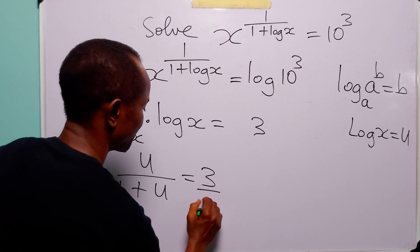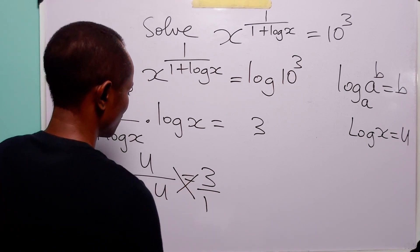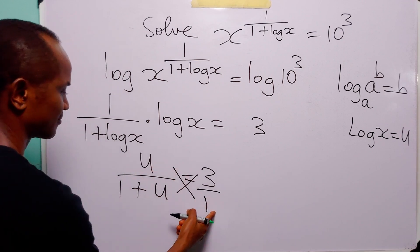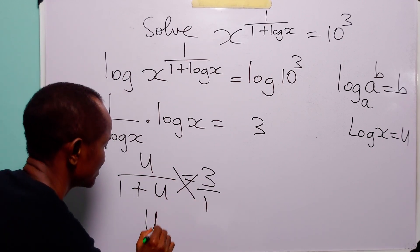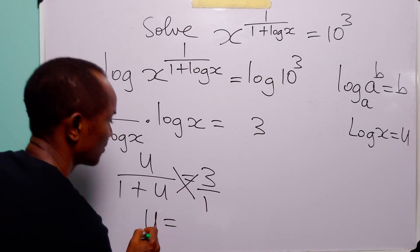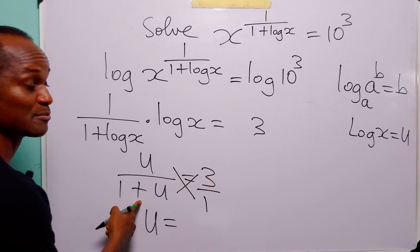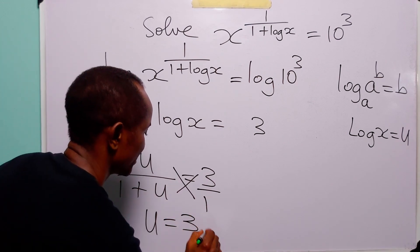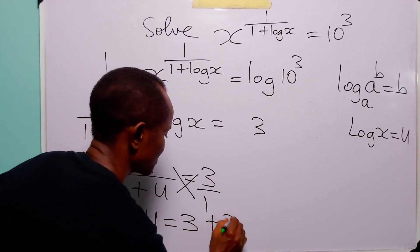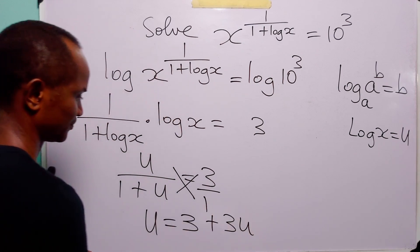When we cross multiply we have u times 1, which is u, is equal to 3 times (1 + u), which is equal to 3 + 3u.